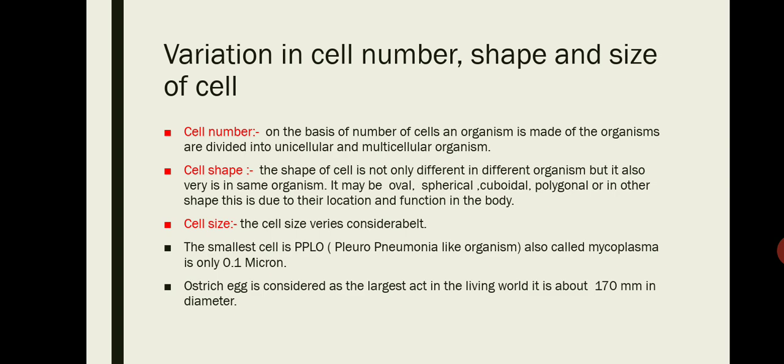Cell size also changes considerably. If we talk about the smallest cell, that is PPLO, Pleuropneumonia Like Organism, which is only 0.1 micron. And if we talk about the largest cell, that is 170 mm in diameter, and that is ostrich egg.